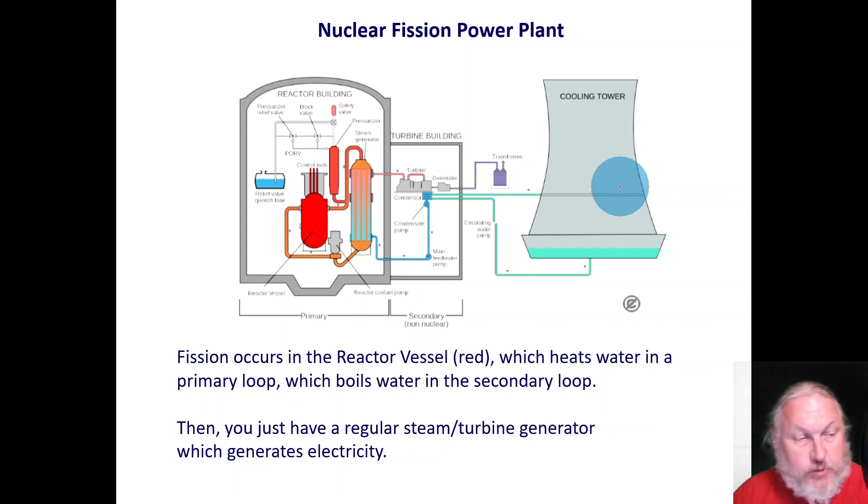You have to keep it cool because it's a very, very hot process. So fission occurs when the vessel, the red vessel, will heat the water in the primary loop. And this will boil water in the secondary loop. And once you get to this part right here, essentially you're doing the same thing as in a coal-fired plant. You're producing heat to produce steam to turn an electrical generator, a turbine if you would.